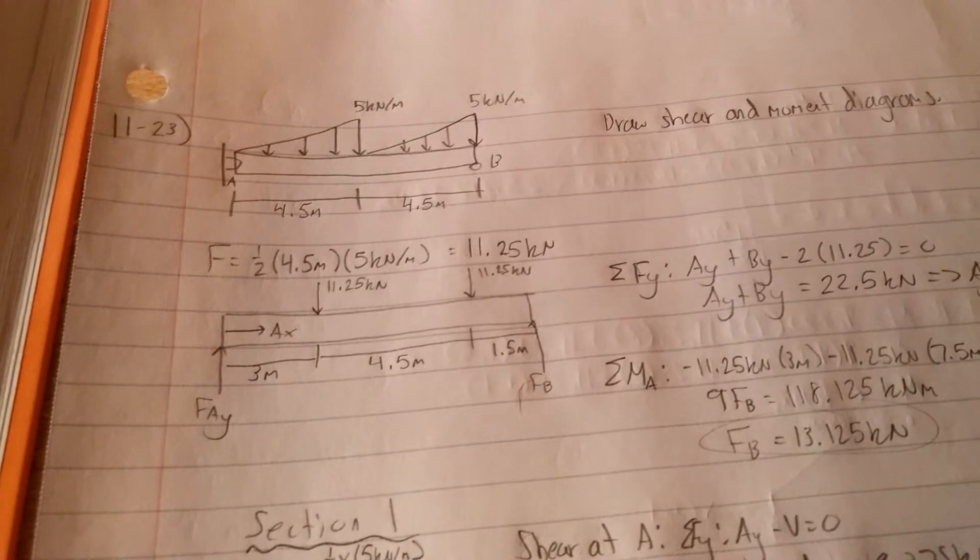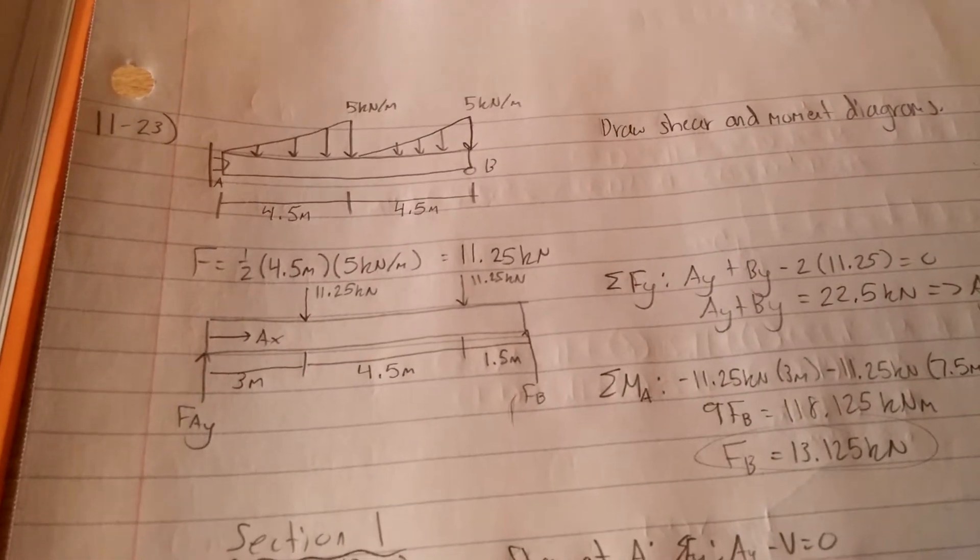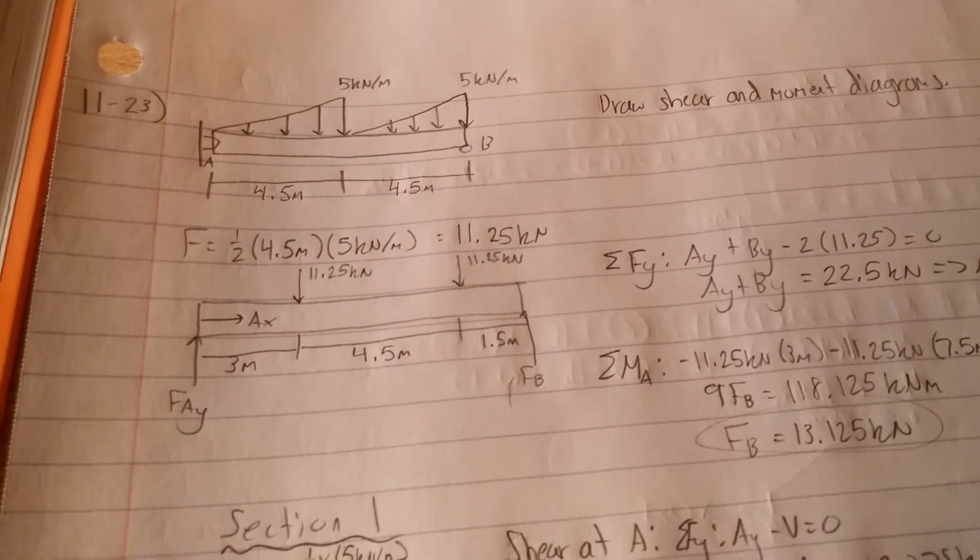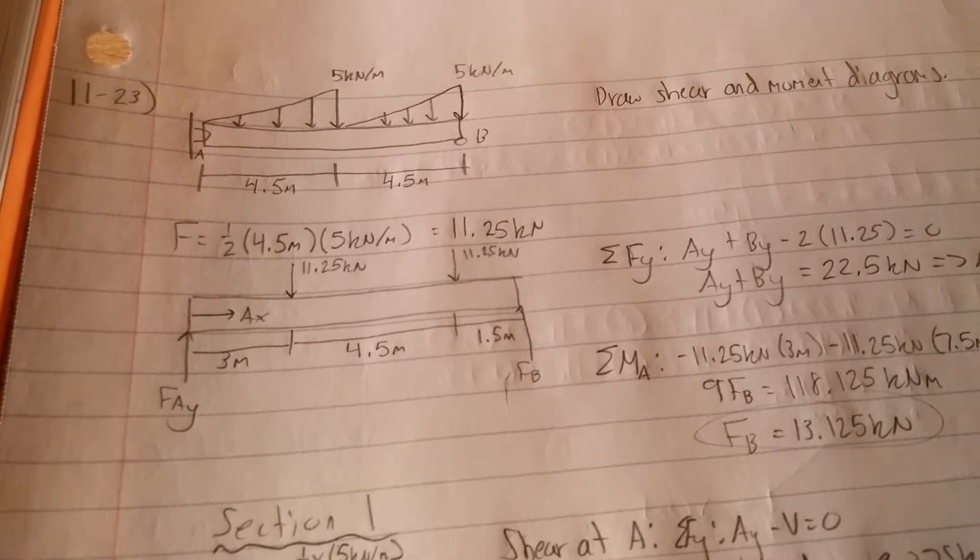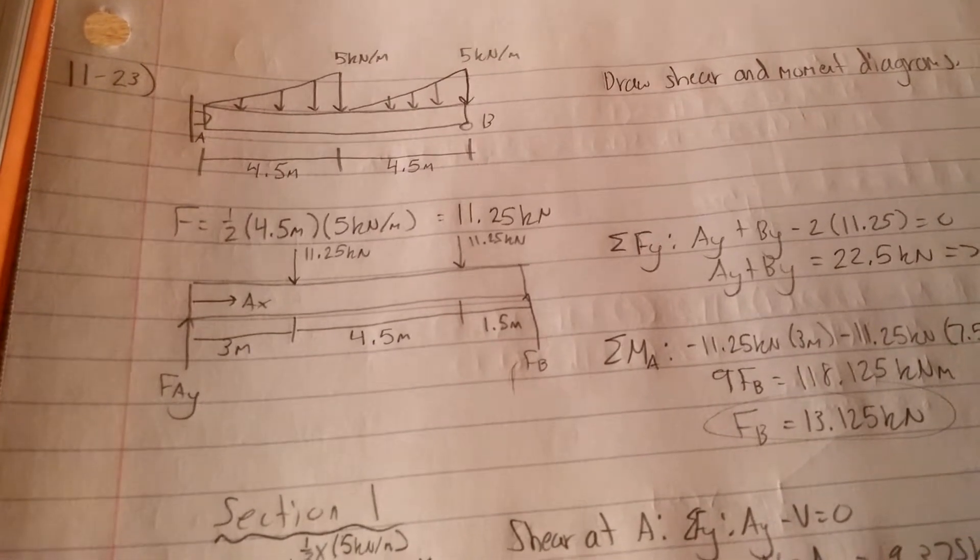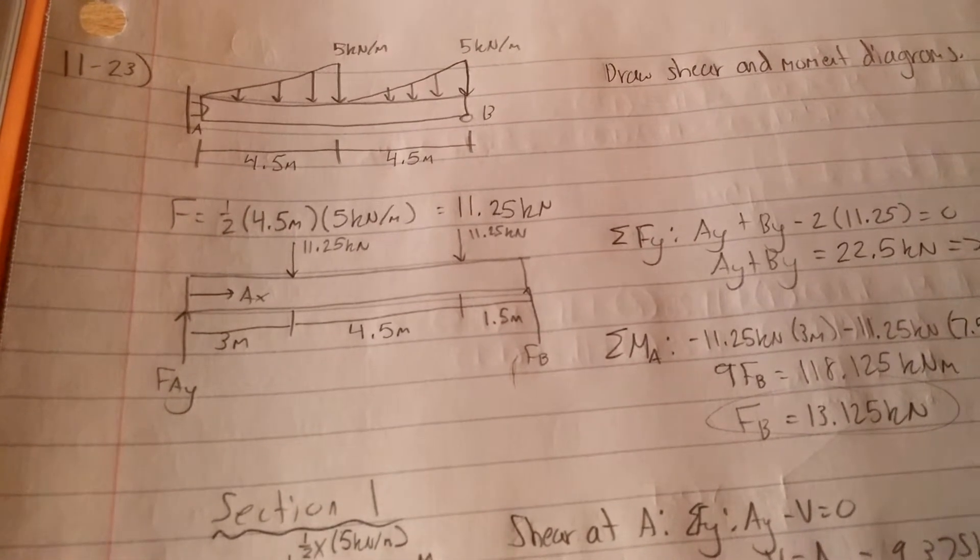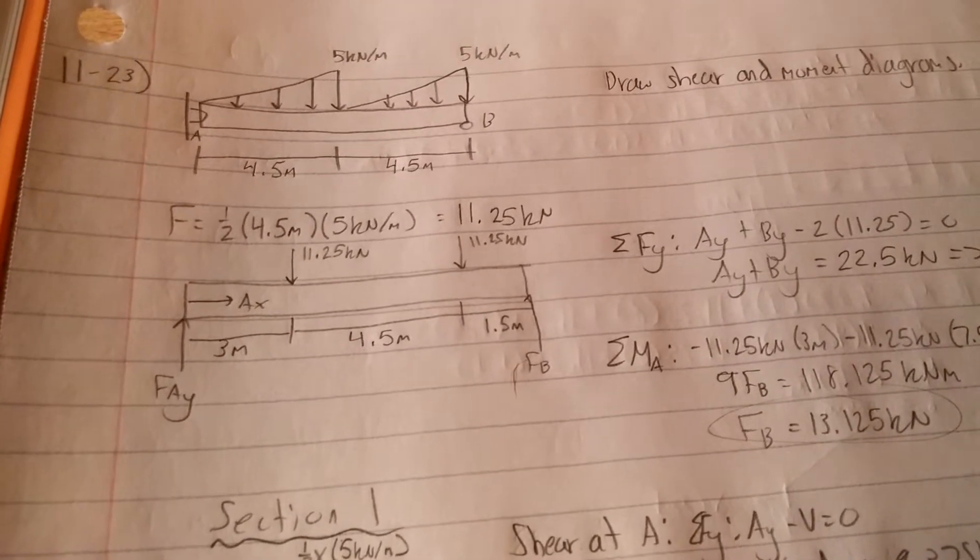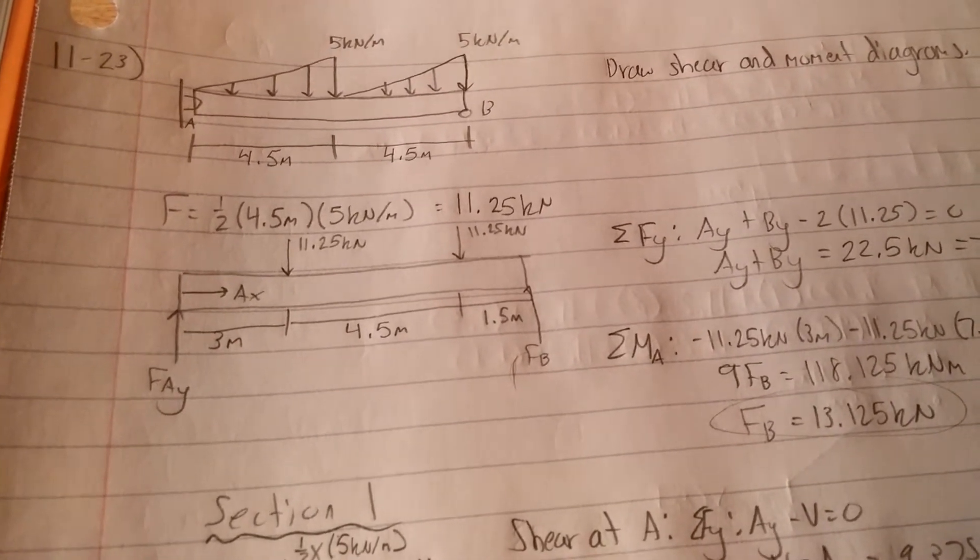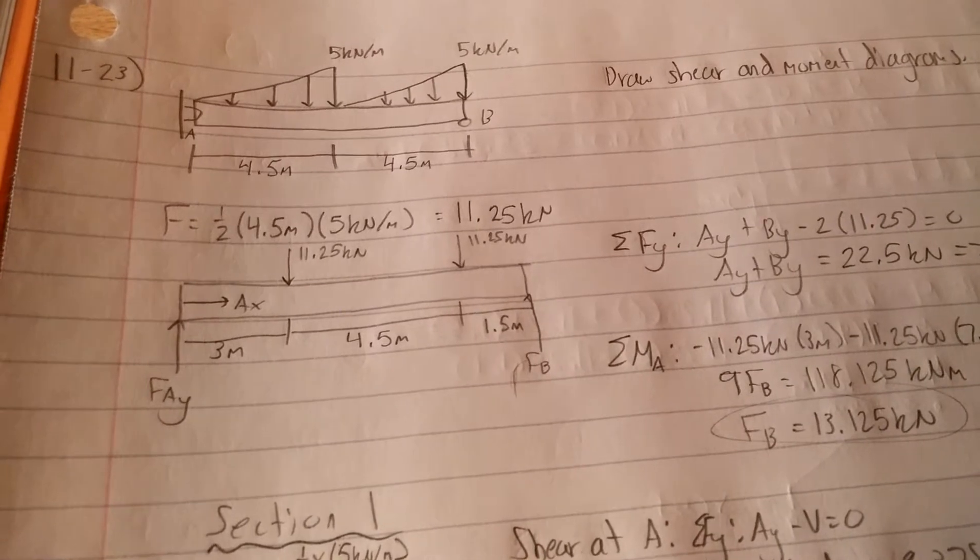We don't care about how far it acts in the Y, we only care about how far it acts in the X for the moment equation. So one-third of 4.5 is 1.5. The first one's going to act 3 meters from A. The second one's going to act 1.5 meters from B.